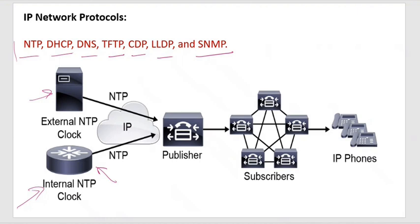NTP is a mandatory requirement — time synchronization is mandatory. Then next is DHCP. Why? Because we need IP. All the devices need IP. When we talk about the collaboration endpoints — some phones, IP phones — we do not have an interface like computers or laptops where we go and statically give an IP address. So that's why we always have to have a DHCP server in a collaboration network so that all your endpoints can get IP addresses from your DHCP server.